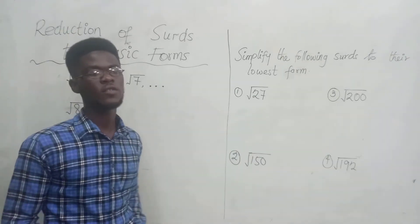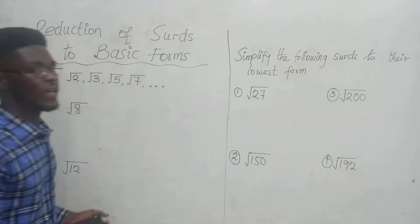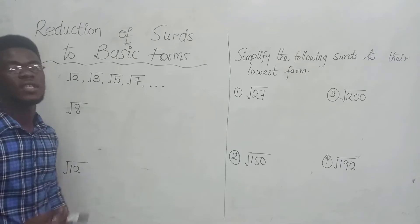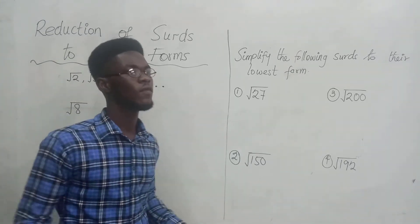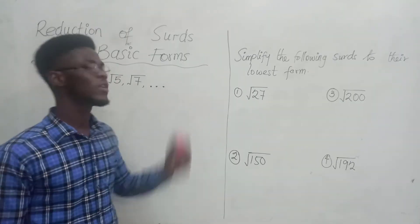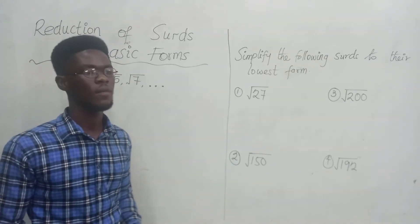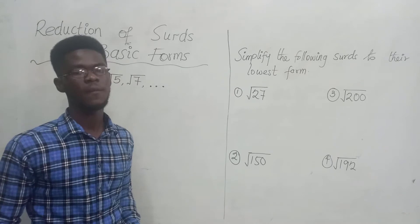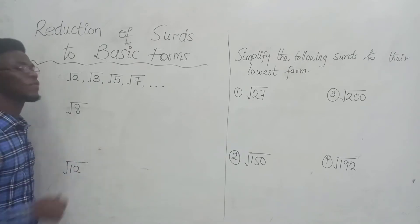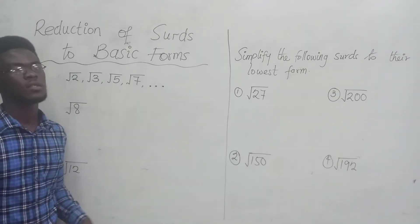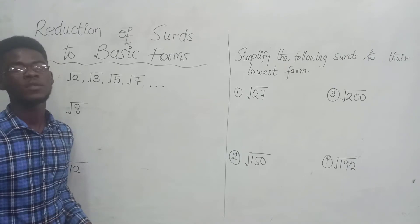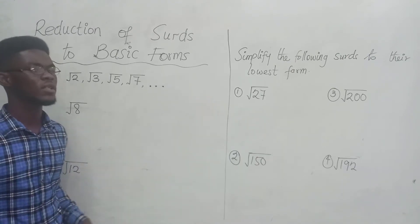Let's look at how we can reduce surds to their basic forms. Surds like square root of 2, 3, 5, and 7 are already in their basic form — meaning the simplest or lowest form. Nothing can be done to reduce them further. But when we talk about surds like square root of 8, square root of 8 is not in the basic form. So we are going to look at how to reduce surds to their lowest or basic form.